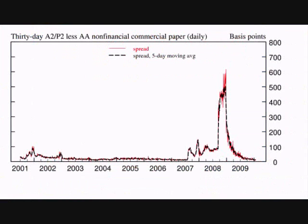The next tool the Fed has for controlling spending in the economy is changing the discount rate. The discount rate is the interest rate that banks pay to borrow funds directly from their Federal Reserve Bank. Banks are only required to hold onto a certain percentage of their customers' deposits, which is known as the reserve requirement. If a large withdrawal is made, to keep from falling below the reserve requirement, banks may need to borrow money from the reserve bank. The interest rate they pay on this loan is called the discount rate.